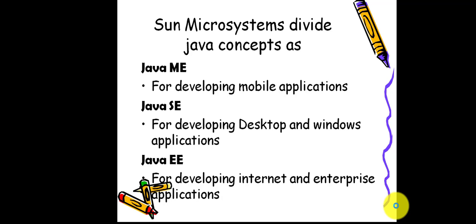Sun Microsystems developed Java and divided its concepts into three variations: Java Micro Edition (Java ME) for developing mobile applications; Java Standard Edition (Java SE) for developing desktop and Windows applications; and Java Enterprise Edition (Java EE) for developing internet and enterprise applications.